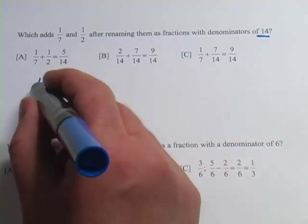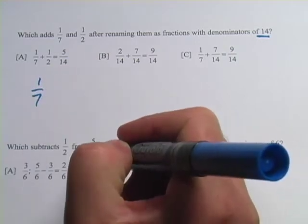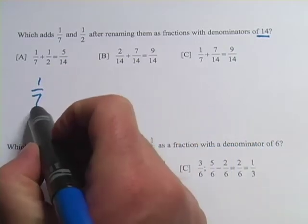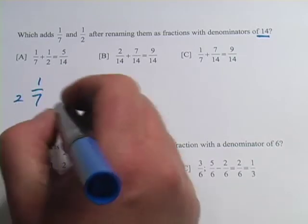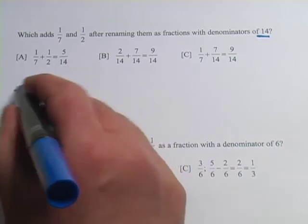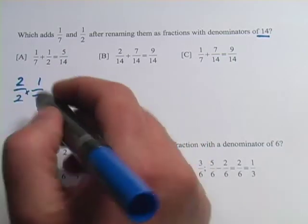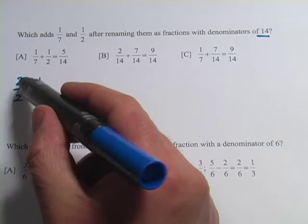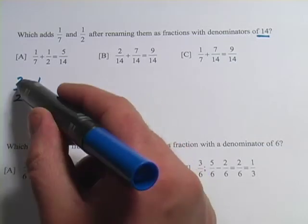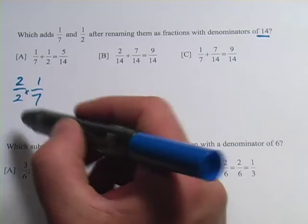The way we do that is we multiply by some number. What would we have to multiply 7 by to get 14? Well, that answer would be 2, but we're going to multiply by a fraction that is that number over itself. You might remember that any number over itself is the number 1. If you punch this into a calculator, 2 divided by 2, you'd get 1.